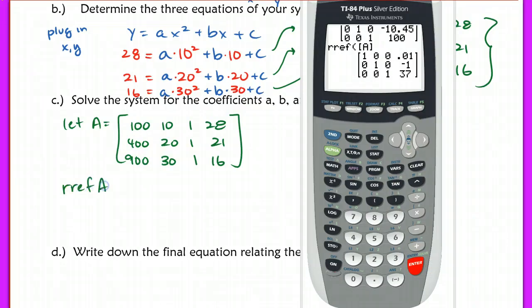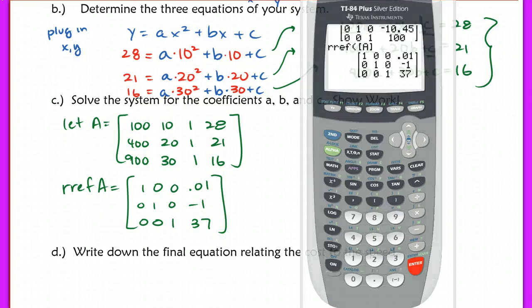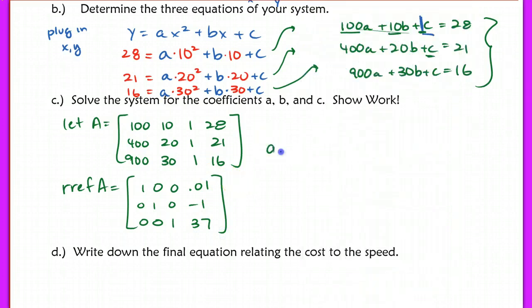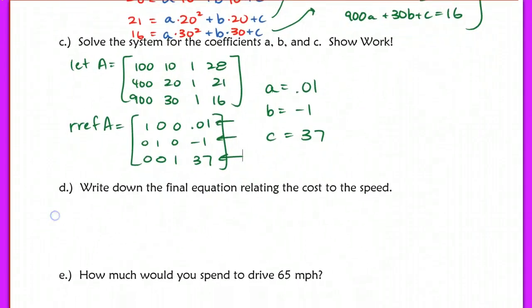Let's define this. RREF of A is equal to 1, 0, 0, 0, 1, 0, negative 1, and 0, 0, 1, 37. So what this tells me is that a equals 0.01, b equals negative 1, and c equals 37. So there's the answers to those variables.